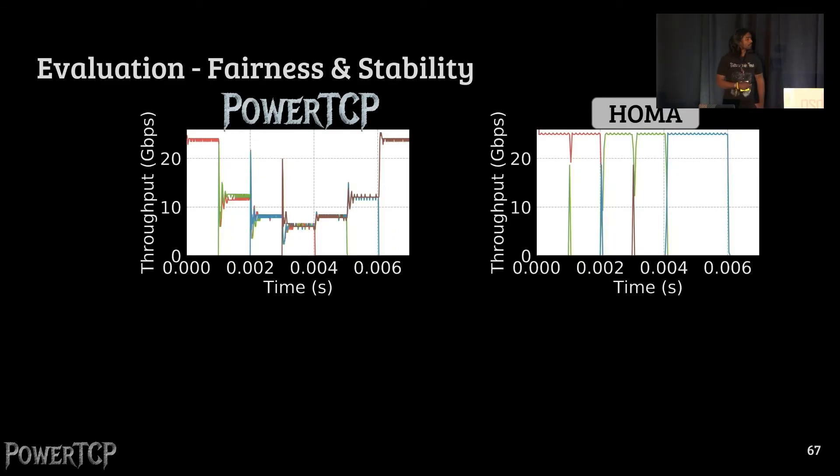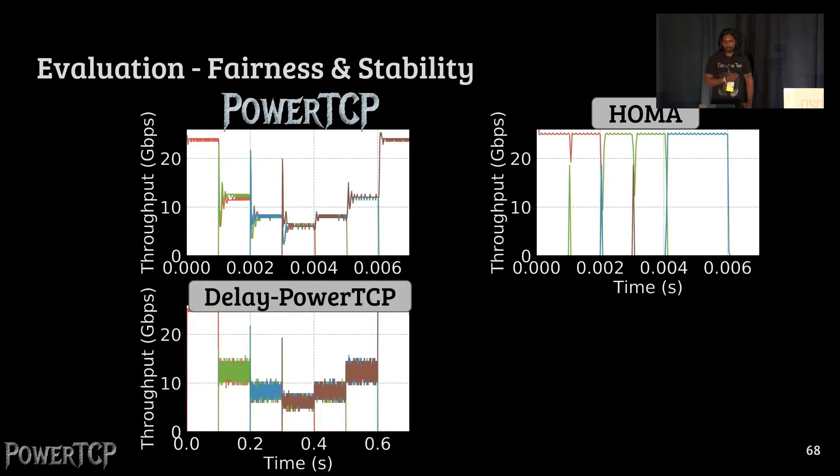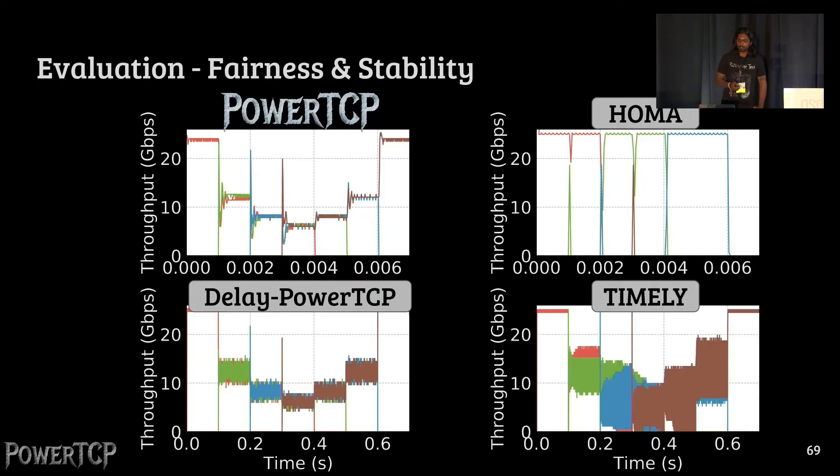In comparison, HOMA is indeed unfair. This is mostly due to its choice of shortest remaining processing time scheduling, SRPT. The approximated version of PowerTCP indeed is fair, but slightly less stable compared to PowerTCP. Since PowerTCP delay is using the RTT measurement for the feedback, we compare it with timely, which is also using the same feedback mechanism. And as we see, delay PowerTCP is indeed significantly more stable, still using the same feedback as that of timely.